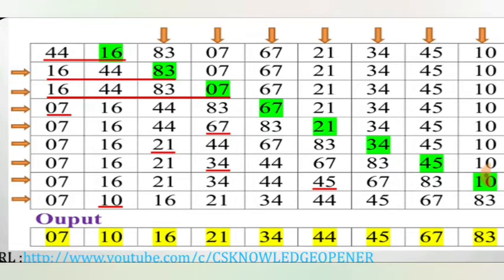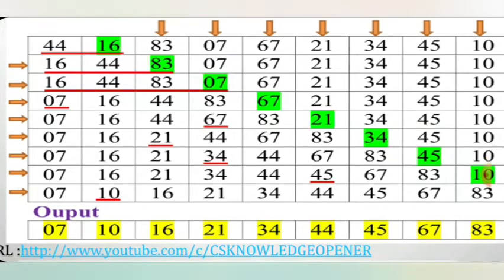21 is greater than 16 and less than 44, so it is inserted between them. 34 is greater than 21 and less than 44, so it is placed correctly. 45 is greater than 44 and less than 67, so it is inserted there. The last element is 10: 10 is greater than 7, so it goes in the second position. Finally, the sorted array is: 7, 10, 16, 21, 34, 44, 45, 67, and 83.